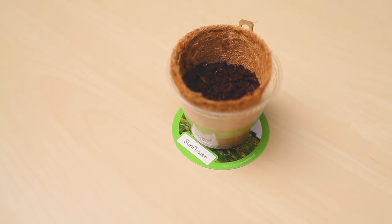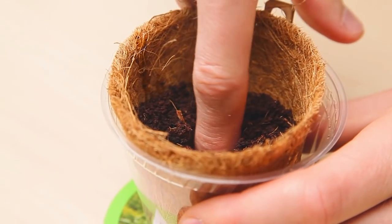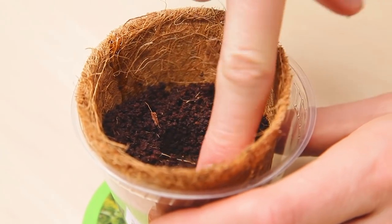For the sunflower, pea, and watermelon seeds, poke your finger into the soil, drop the seed in, and cover.